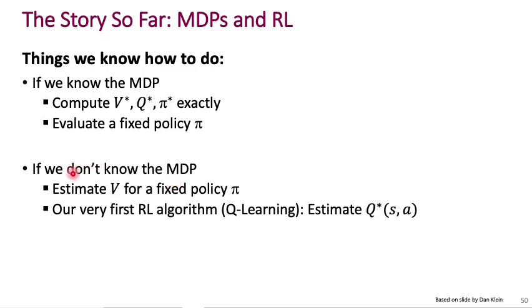Now, if we don't know the MDP, we've just begun to deal with the setting. If we don't know the MDP, in particular, we don't know P and R, the transition probability and the reward function, then we've seen this idea of temporal differencing, where you can actually learn to estimate the V for a fixed policy pi. That's policy evaluation through temporal differencing.